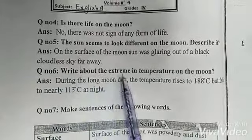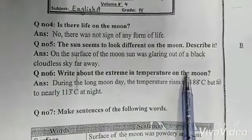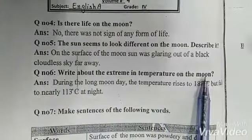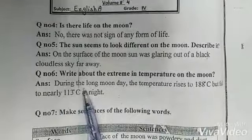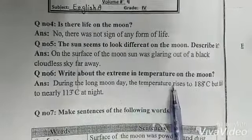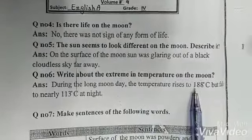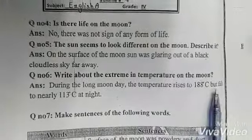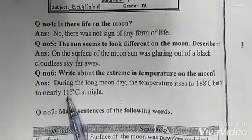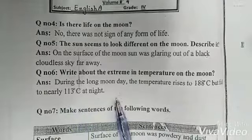...6: Write about the extreme in temperature on the moon. Chand ki sata par dharjar harat ki intaha banae. During the long moon day, the temperature rises to 188 degree Celsius but falls to nearly 113 degree Celsius at night.